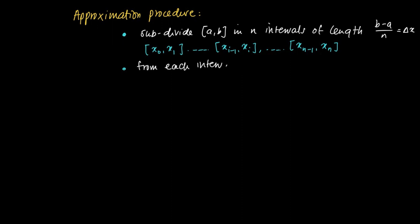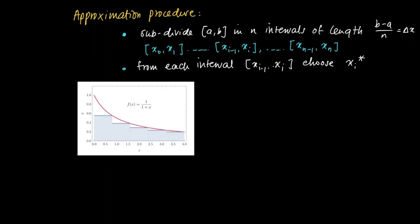from each such i-th interval [xi minus 1, xi], we sample a point. What does it mean? We just choose, we pick a number, xi star, from which we evaluate the function value.